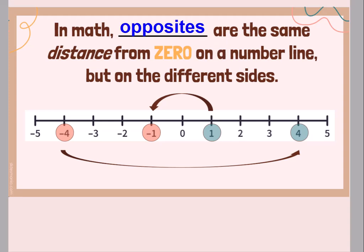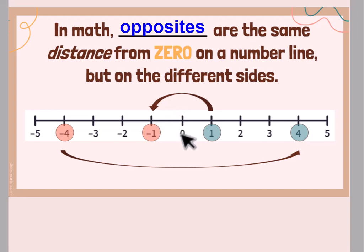In math, opposites are the same distance from zero on a number line, but they're on different sides. Let's take a look at one. One is one unit from zero on the right side of the number line. So the opposite would be on the left side — what's one unit from zero on the left side? Well, it's negative one. So negative one and one are opposites. Look at negative four: it is four units from zero on the left side. The opposite of the left side is the right side, so four units from zero on the right side would be positive four. So negative four and positive four are opposites.